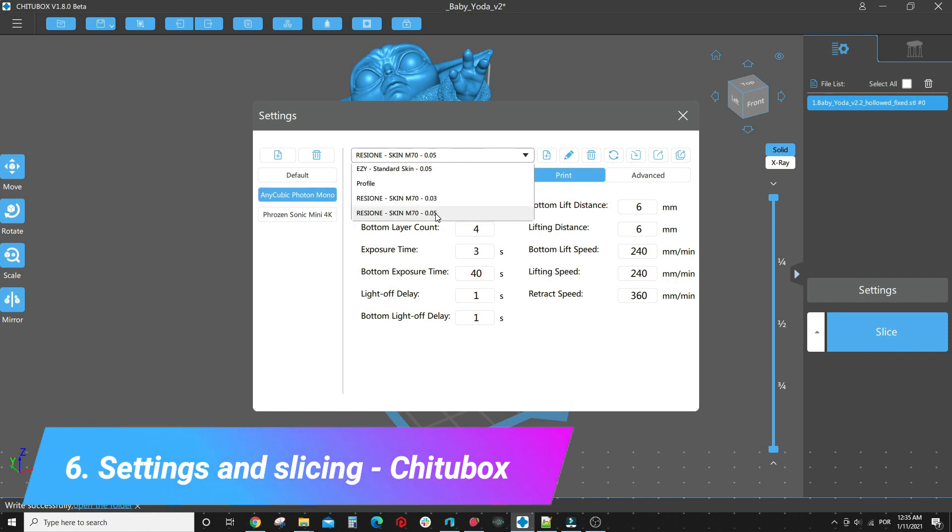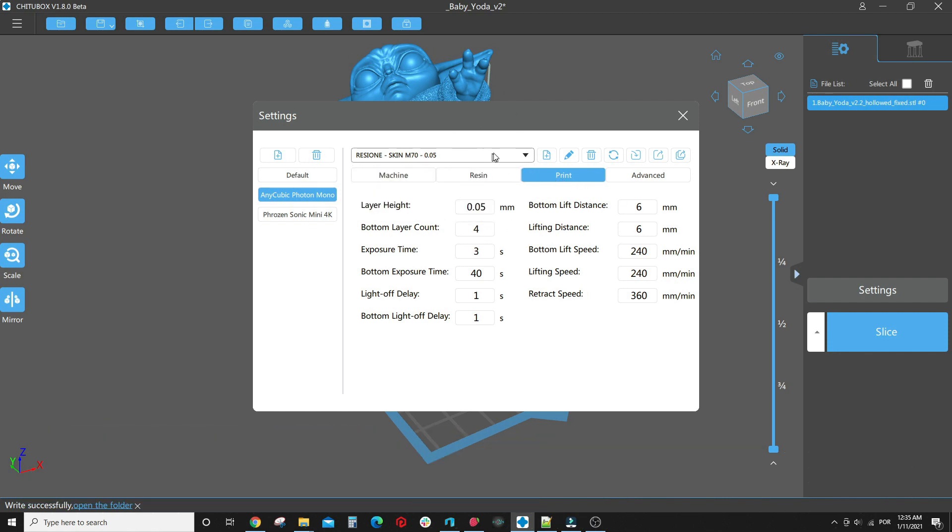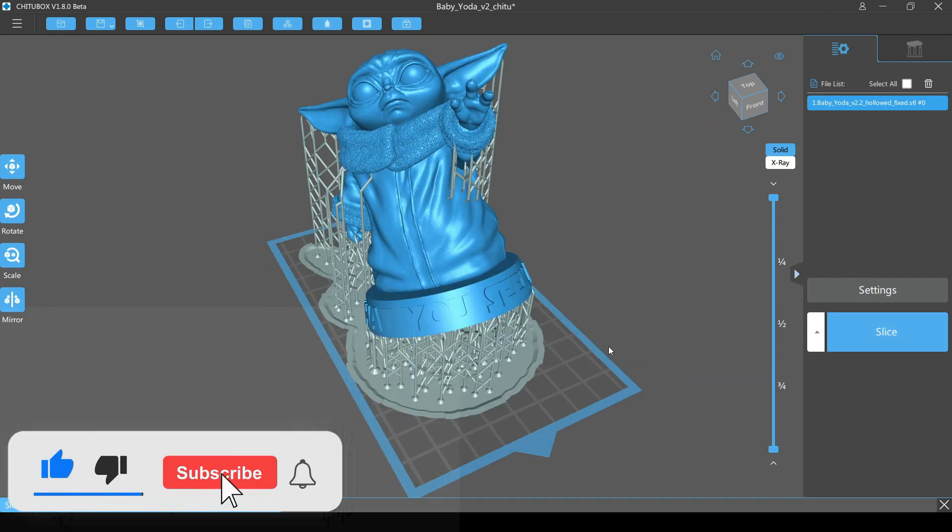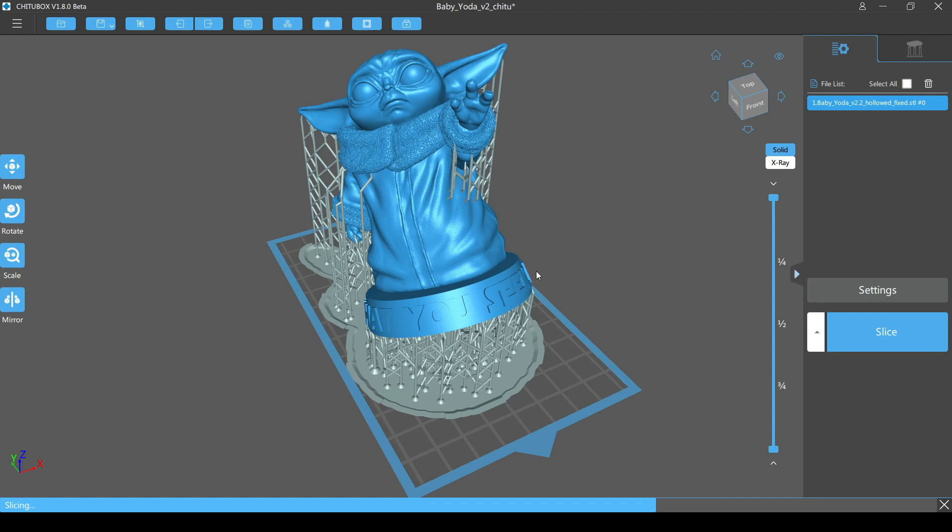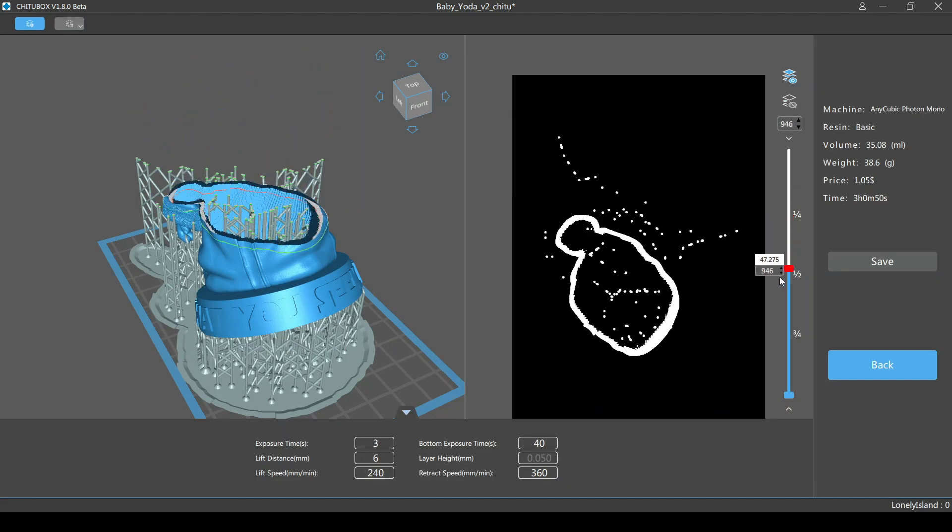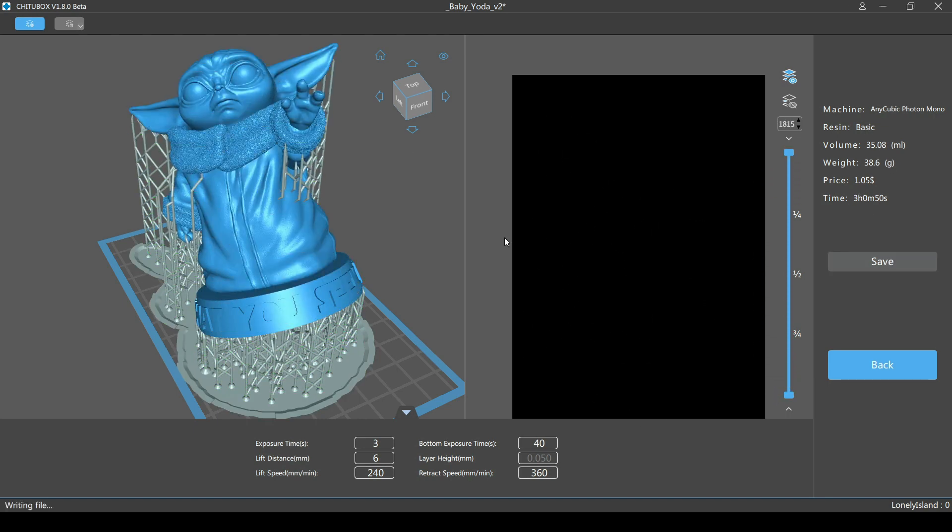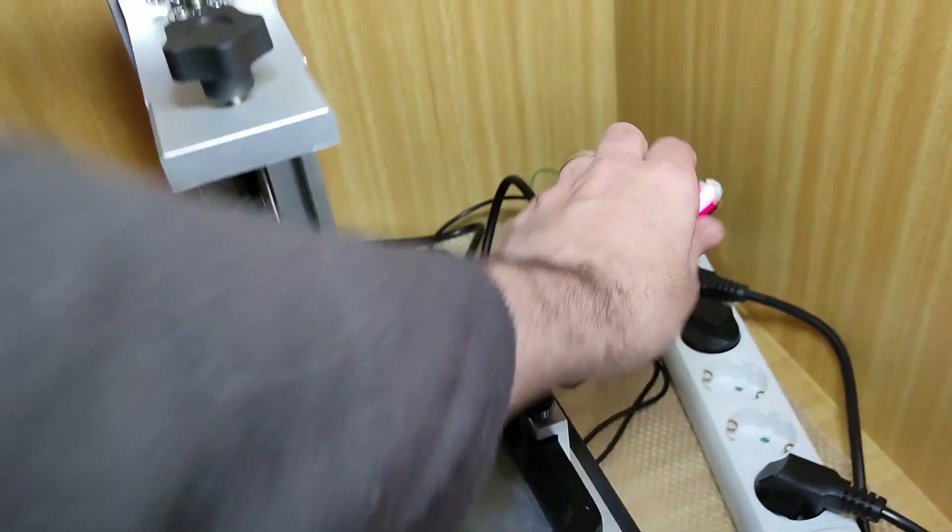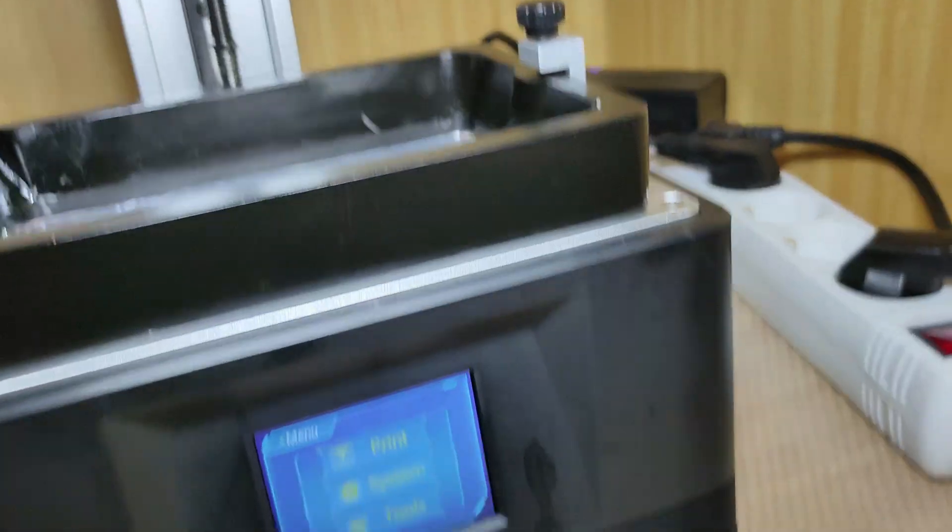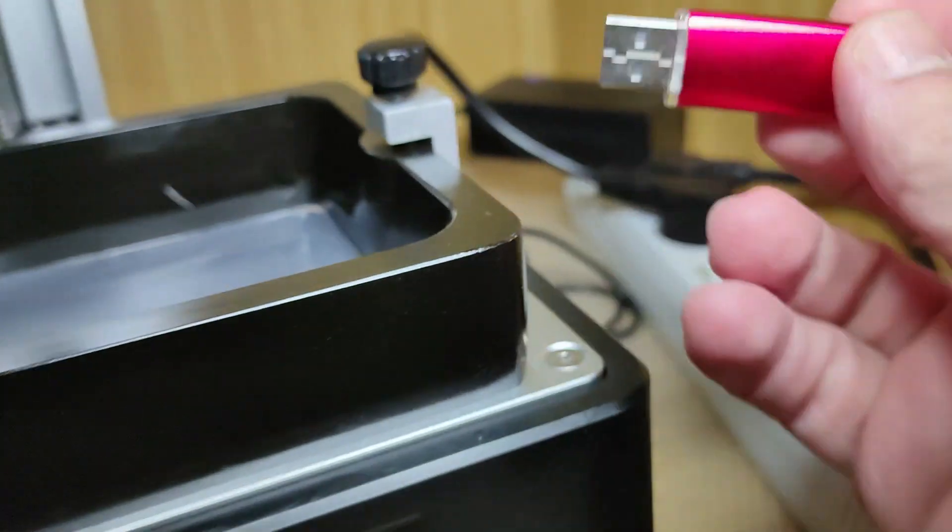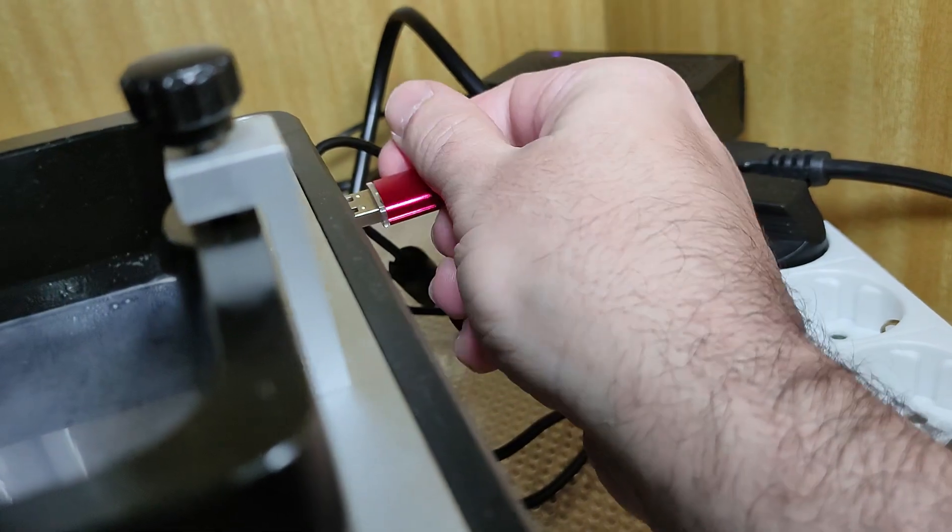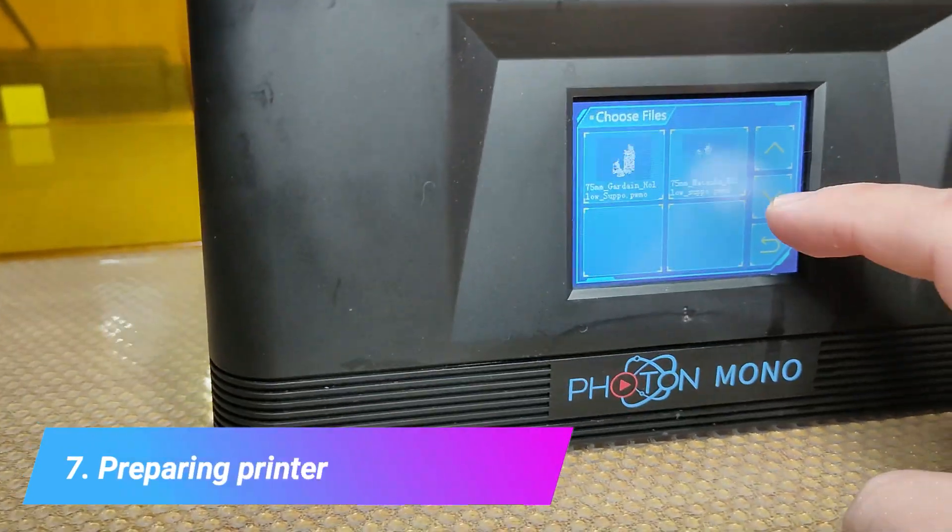ChituBox is the same thing, check your resin, in this case I'm going to use my Photon Mono, and you slice your file here, and just check layer by layer. Save the file, and then you are going to get your USB from the printer, stick your USB on your PC, and save the file there, and then get your USB back to the printer. In case of the Phrozen Sonic Mini 4K, I'm sending it through Wi-Fi.